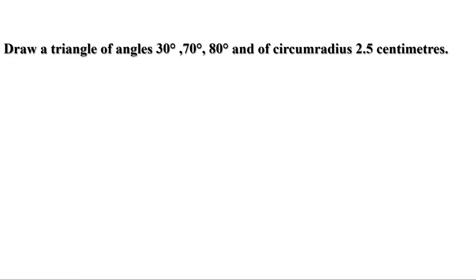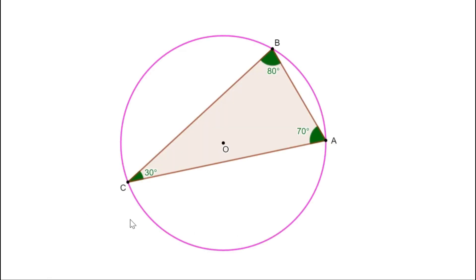Next problem: draw a triangle with angles 30 degrees, 70 degrees, and 80 degrees, and a circumradius of 2.5 cm. Three angles and the circumradius are given. Angle A is 70 degrees, angle B is 80 degrees, and angle C is 30 degrees, with circumradius 2.5 cm. Using the measurements directly, we cannot draw this figure because we cannot be sure the vertices will lie on the circle.